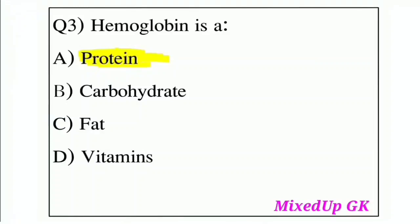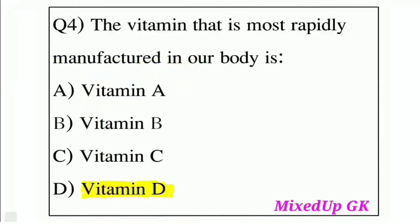Question 3: Haemoglobin is — Option A: Protein, Option B: Carbohydrate, Option C: Fat, Option D: Vitamins. The correct answer is Option A: Protein. Question 4: The vitamin that is most rapidly manufactured in our body is?